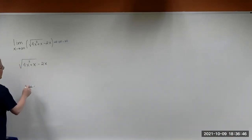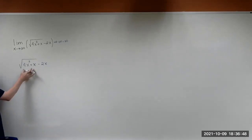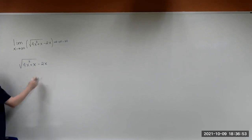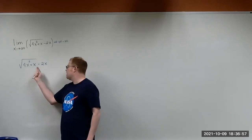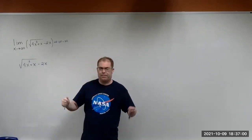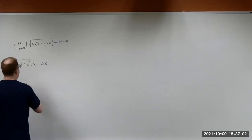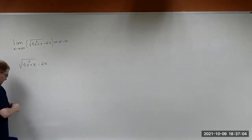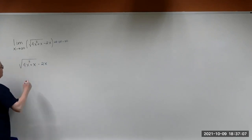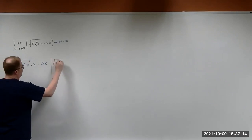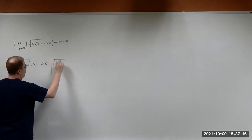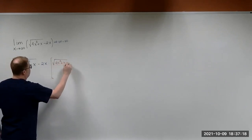What is the conjugate? Basically, if you have some expression in this form — in this case, you have this minus this — then the conjugate is going to be this plus this. So by definition, if the original has a minus sign, the conjugate has a plus sign. We're going to take this function and multiply it by its conjugate: the square root of 4x squared plus x, plus 2x.